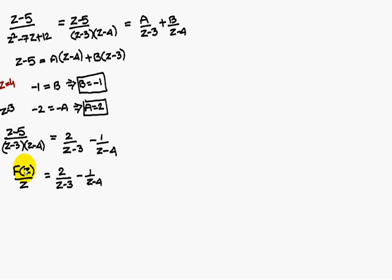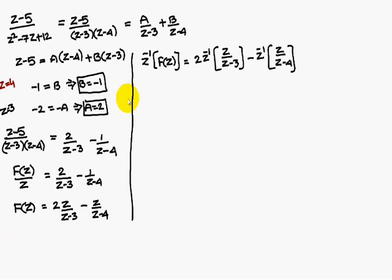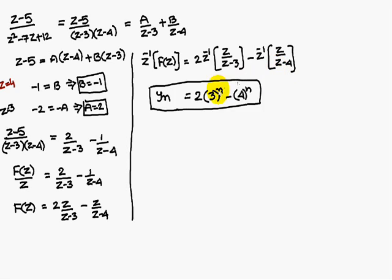This is nothing but Y(Z)/Z. Therefore Y(Z) equals 2·Z/(Z minus 3) minus Z/(Z minus 4). Now applying Z-inverse to both sides: Z-inverse of Y(Z) equals 2 times Z-inverse of Z/(Z minus 3) minus Z-inverse of Z/(Z minus 4). Z-inverse of Z/(Z minus 3) is 3 power n, and Z-inverse of Z/(Z minus 4) is 4 power n. Therefore Yn equals 2·3ⁿ minus 4ⁿ. This is the solution using partial fractions applied to difference equations.